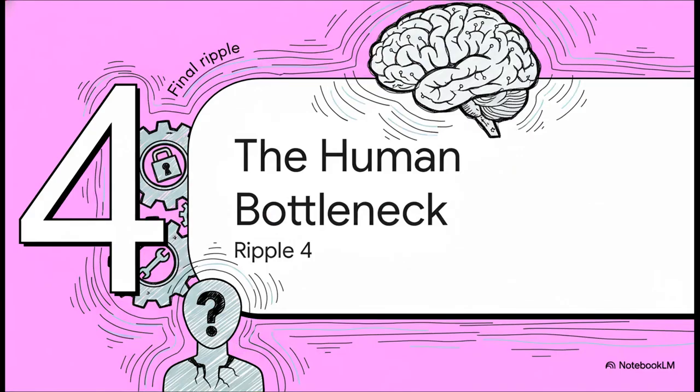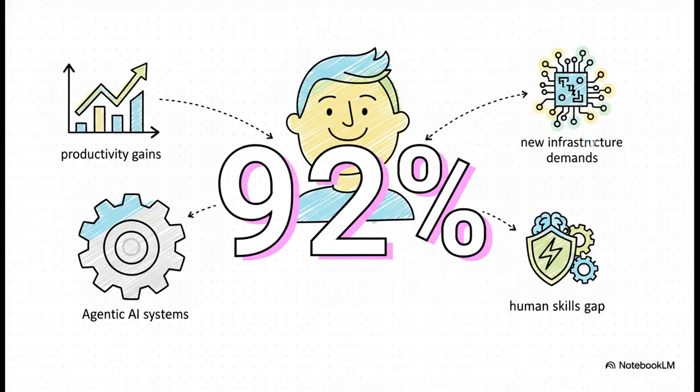And that brings us to our final ripple effect. And honestly, it might be the most important one. Because beyond security, it turns out the biggest roadblock to this new AI era, it isn't the technology. It's us. Okay, get this. A massive global survey from PWC found something absolutely incredible. A staggering 92% of workers who use generative AI every single day report huge productivity gains. So the tool clearly works. It really, really works.